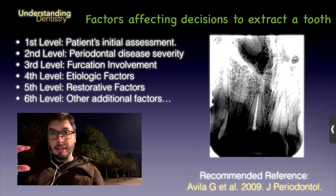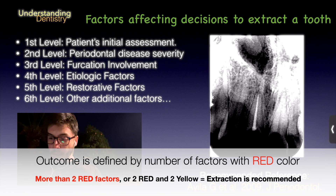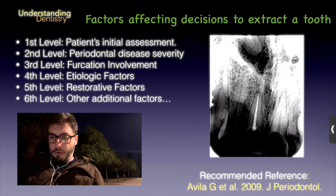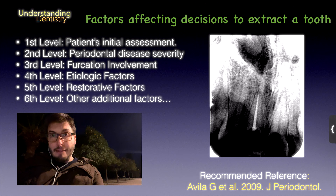For example, three red colors would mean extraction is recommended or likely recommended. Two red colors and two yellow colors would also be a recommendation for extraction. I really recommend looking at this article because there are additional criteria for green and yellow colors. To summarize Level 1 — patient's initial assessment — the categories are patient expectations, treatment expectations, aesthetics, and finances.